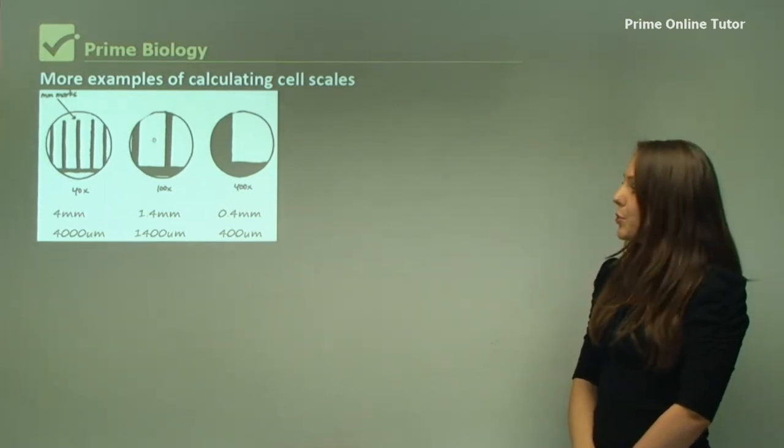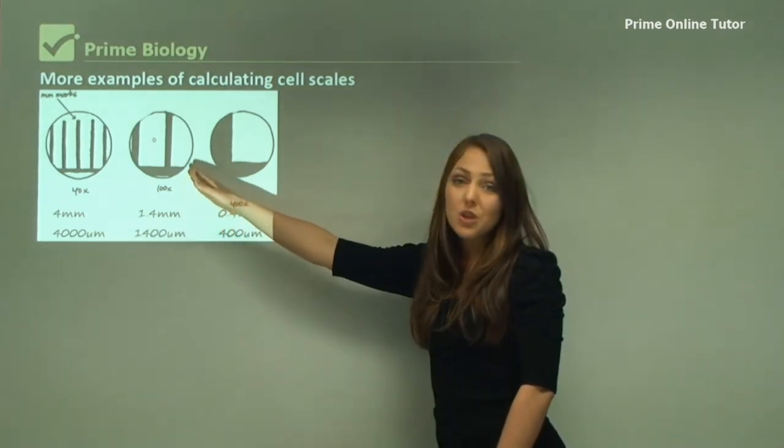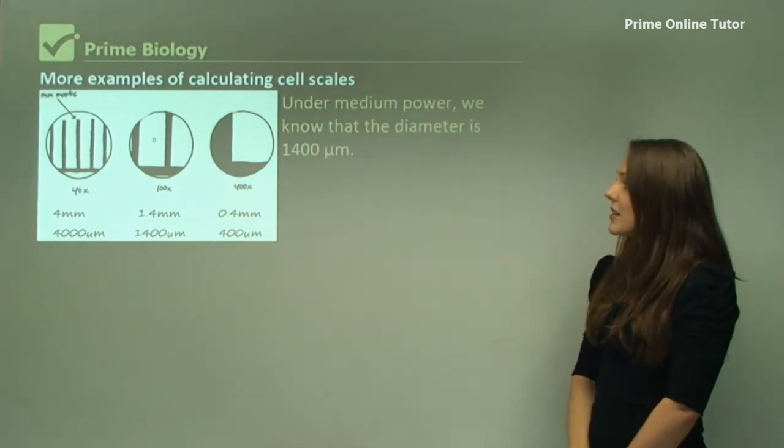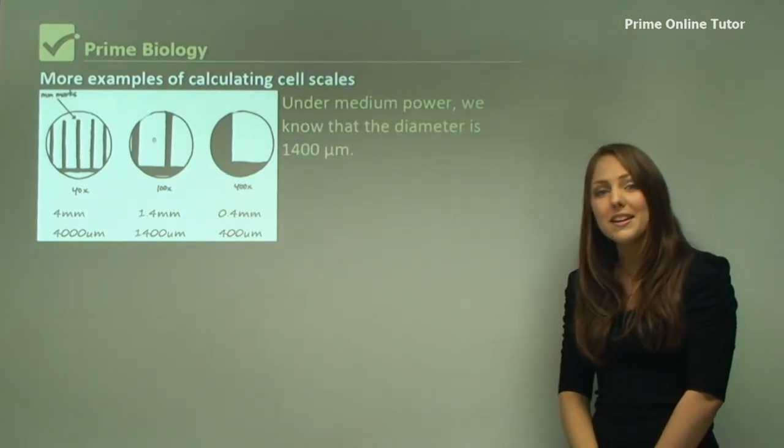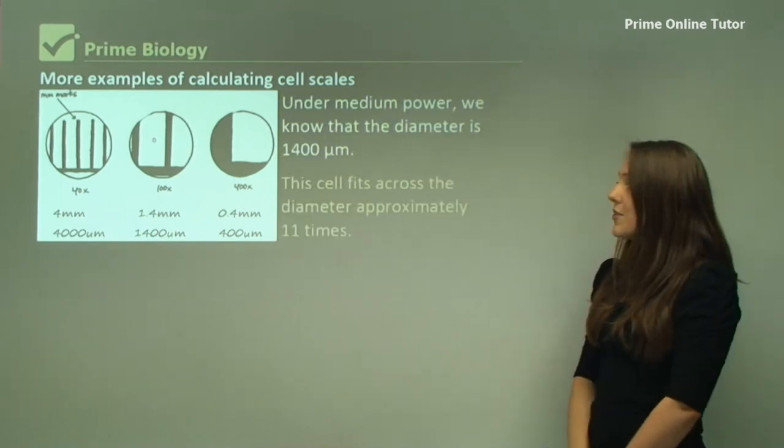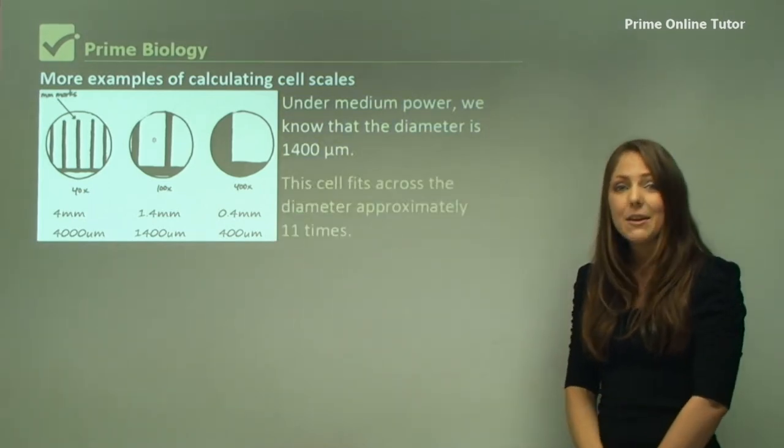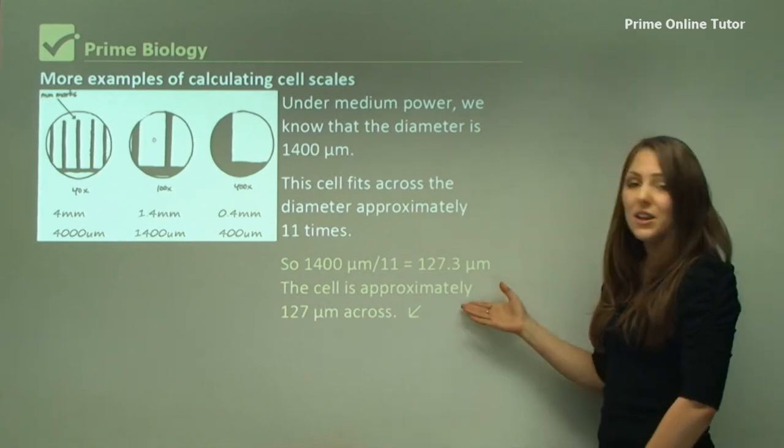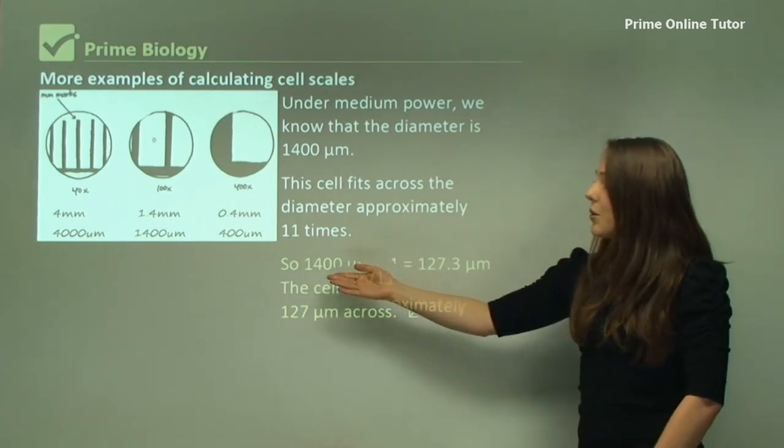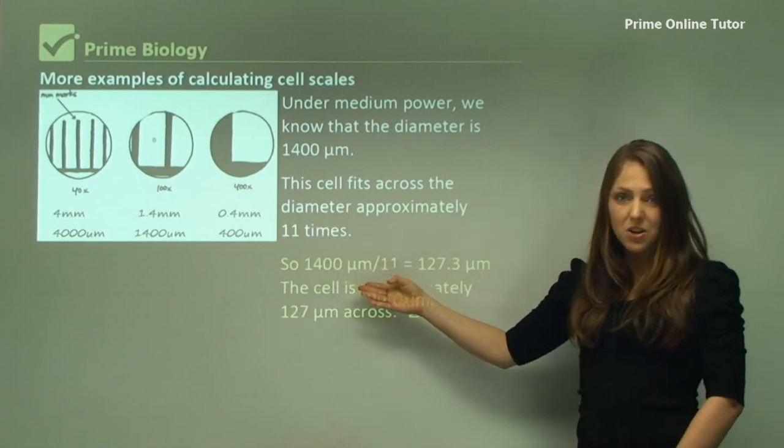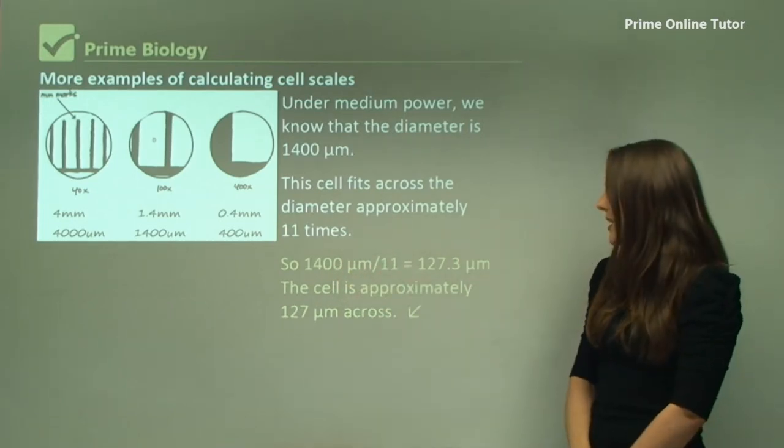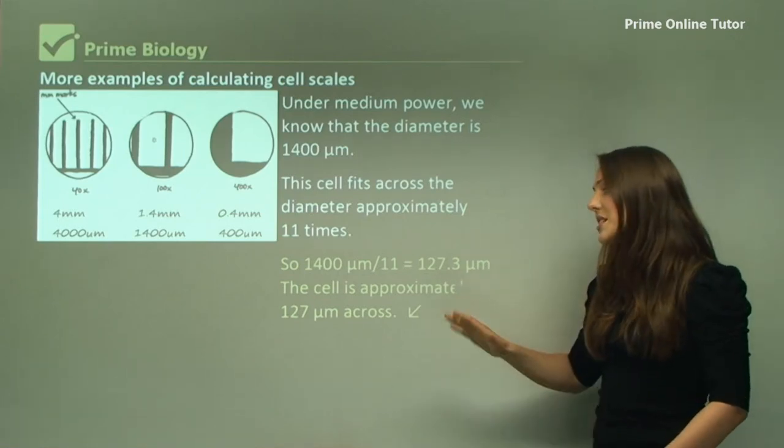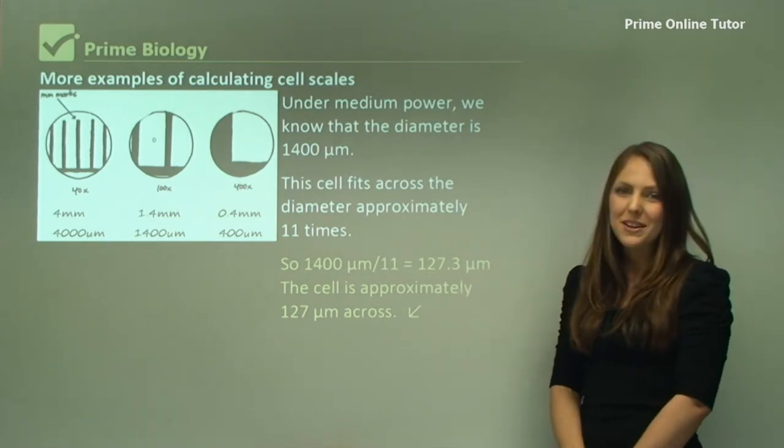This is another example. For the 100 times total magnification, I have drawn a little cell here. We know that that's 1400 micrometers in diameter. If the cell fits across approximately 11 times, we can work out how big that cell is by using this formula. We say 1400 micrometers across the diameter divided by 11 equals 127.3 micrometers. Approximately that's 127 micrometers across.